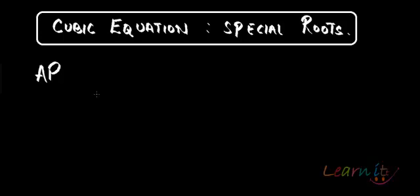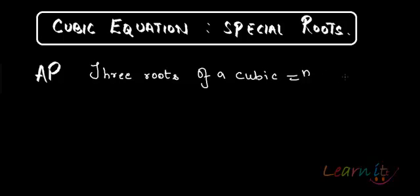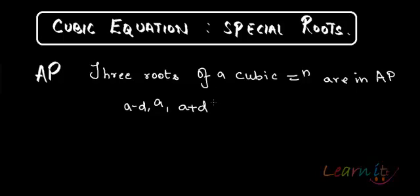With the roots of cubic equations, we can play a bit. What happens is that you have essentially three roots. Now, these three roots can be such that they are in arithmetic progression. So let's try to figure out: if three roots of a cubic equation are in AP, they may be taken as A-D, A, and A+D. This is in arithmetic progression.